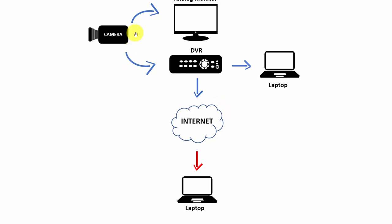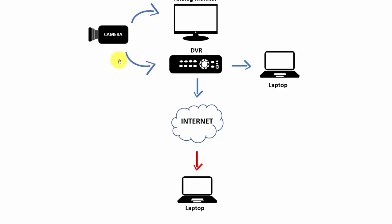This diagram is very important to understand: you must convert from analog to digital so you can see over the internet — otherwise you can't send an analog signal over the internet unless you convert it to digital. So keep this diagram in mind. When you want internet connection to your security system, you need to connect your DVR or your IP camera to a router and to the internet so you can see everything.